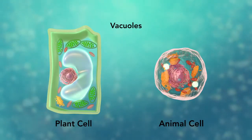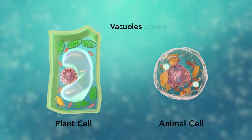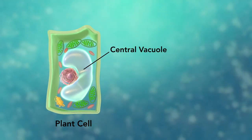Vacuoles are sac-like structures that store different materials. Here, in this plant cell, the central vacuole stores water.